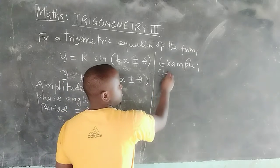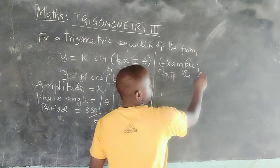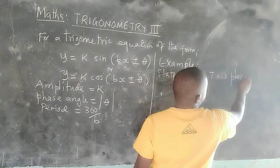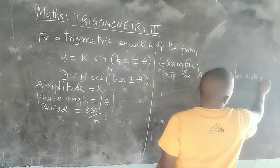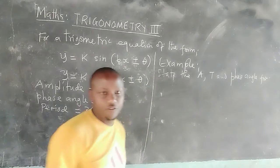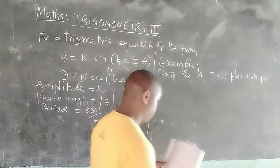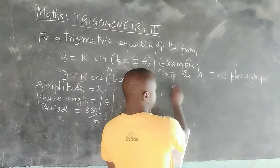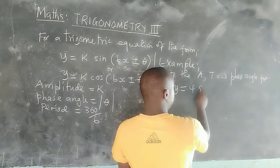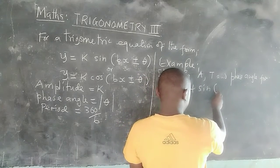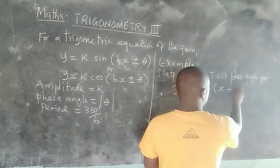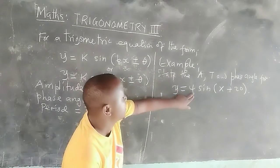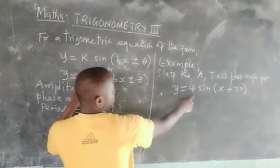State the amplitude, the period, and the phase angle from this equation: y equals to 4·sin(x + 20). The value where k is located is 4.